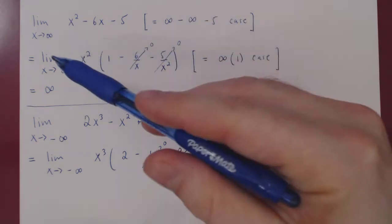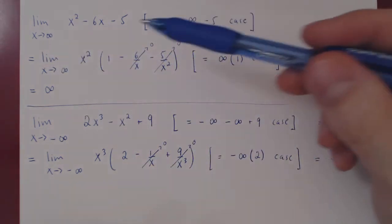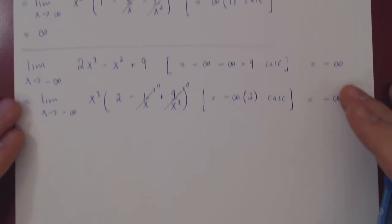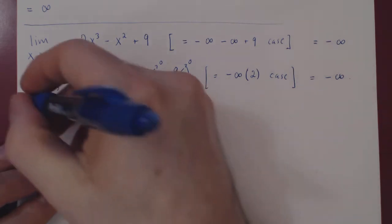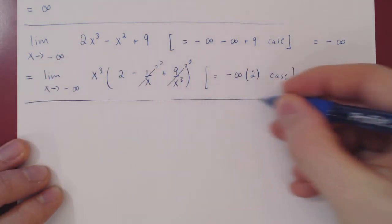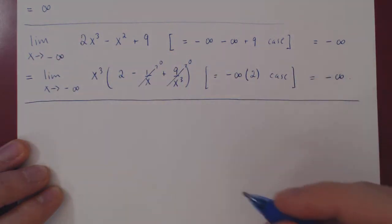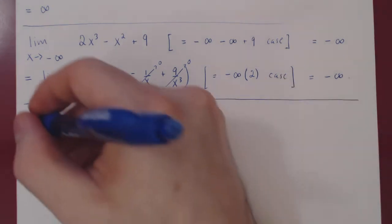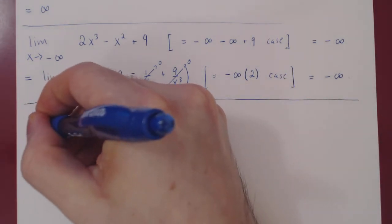If the case is trivial, you don't need to factor, but even if it is non-trivial, by factoring the greater power of x you will be done in one line. Whenever you let x approach positive or negative infinity in the case of a polynomial, there are only two possible answers: either positive or negative infinity. What about rational functions? Will this be much different? Not really — other than the fact that we can obtain several different answers, the idea is the same.